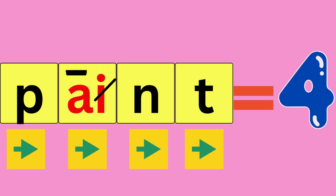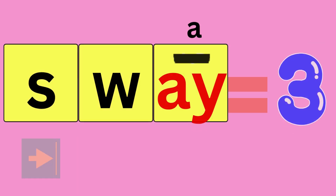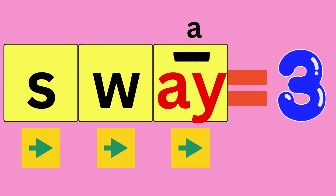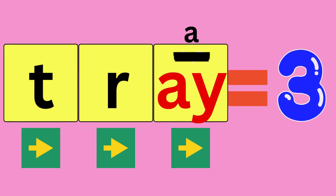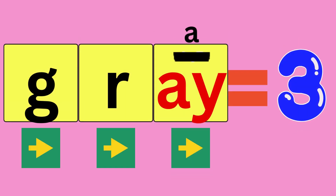Paint: P-A-N-T, paint. How many sounds did you hear? Four. Sway: S-W-A-Y, sway. How many sounds did you hear? Three. Tray: T-R-A, tray. How many sounds did you hear? Three. Gray: G-R-A, gray. How many sounds did you hear? Three.